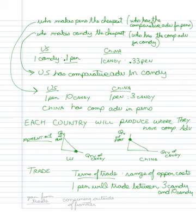It also can't trade for more than 10 candy, because then the U.S. would be the one upset about the situation. The U.S. is giving up candy to get pens, so they're not going to want to give up more than 10 candy to get a pen — because if they do it themselves, they just have to give up 10 candy to get a pen. We don't exactly know where it's going to exist between the two, but it's going to exist somewhere.